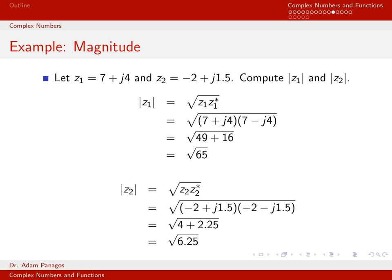We do the exact same steps to compute the magnitude of z2. By definition, the magnitude is the square root of z2 times its complex conjugate. After the cross terms cancel, we're left with the real part squared plus the imaginary part squared: negative 2 squared is 4, and 1.5 squared is 2.25. Adding those gives 6.25, so the magnitude of z2 is the square root of 6.25.